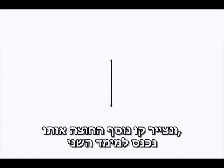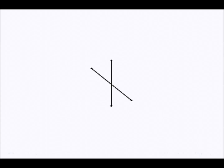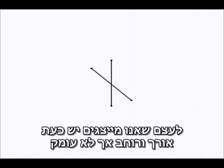If we now take our first dimensional line and draw a second line crossing the first, we've entered the second dimension. The object we're representing now has a length and a width, but no depth.